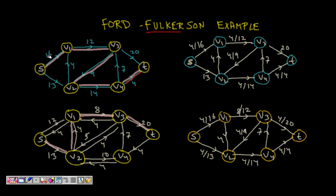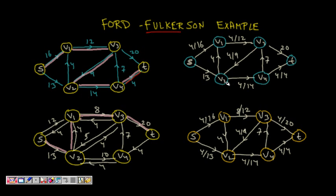We allocate 4 units of flow along this path: 4 out of 16 on S to V1, 4 out of 12 on V1 to V3, 4 out of 9 on V3 to V2, 4 out of 14 on V2 to V4, and all 4 out of 4 on V4 to T.